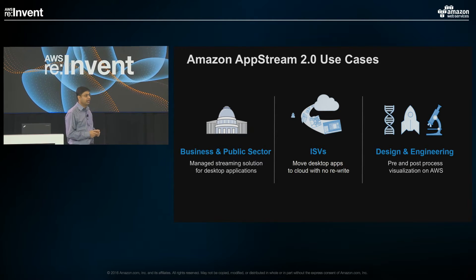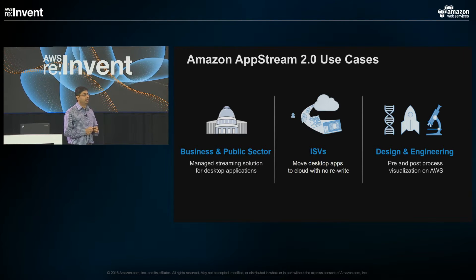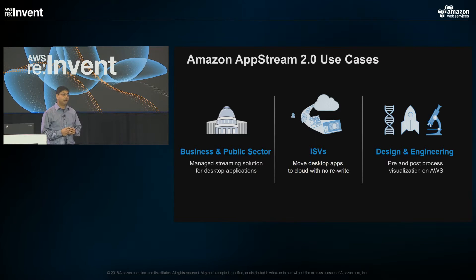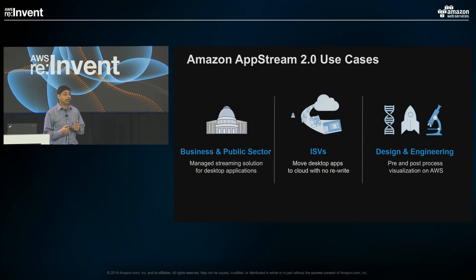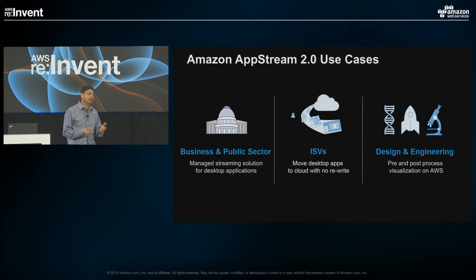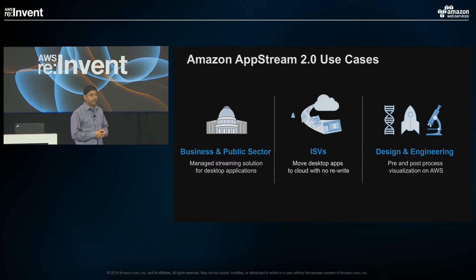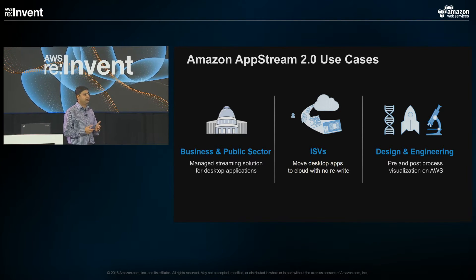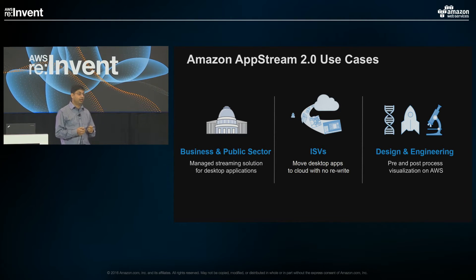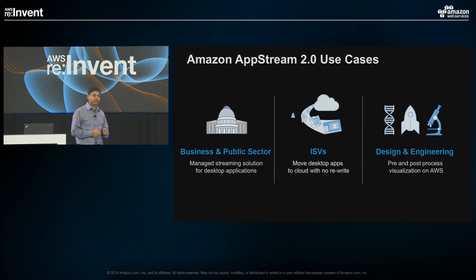Looking across use cases: enterprises want to deliver business-specific or Windows applications to heterogeneous devices via a streaming ecosystem. ISVs want to deliver applications to users, pursue trials and demos. Universities want to do online workshops and deliver software as a service so users can rent software by the hour rather than paying upfront. Companies in design and engineering specifically wanted to co-locate data and applications to visualize effectively without moving data back and forth. We wanted to build a platform that addresses all these use cases while overcoming the gaps and limitations we learned from AppStream 1.